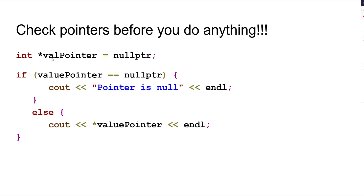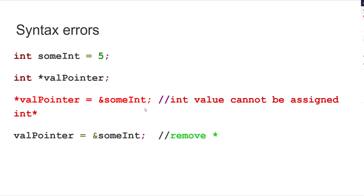Check pointers before you do anything — do not just assume there is something in there. int* valPtr = nullptr. If valPtr == nullptr, then cout << 'pointer is null'; else cout the value. So don't try to just output a value thinking it might have something. We are going to be using a lot of this in project four and in the next couple of videos and in your homeworks.